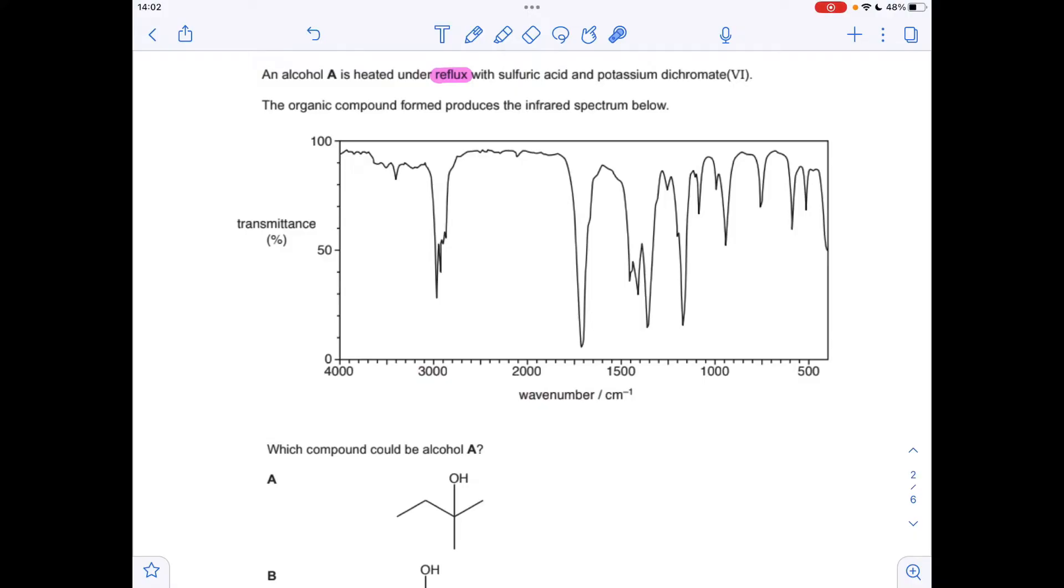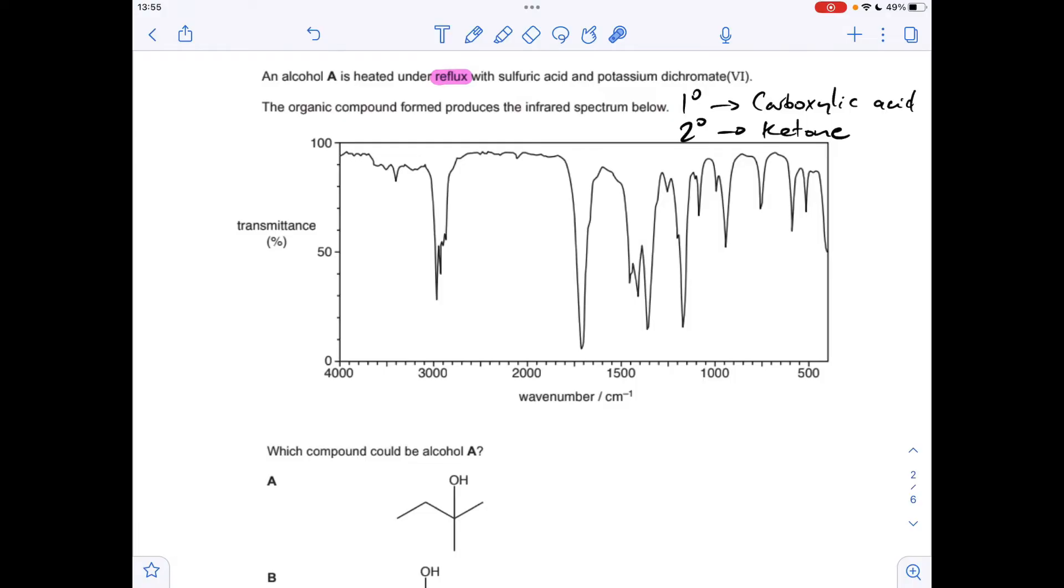Moving on to the last of the multiple choice questions. You'll notice I've highlighted the word reflux, that's really important for this question. Just a quick recap: when you oxidize an alcohol under reflux, if it's primary you'll get both oxidations so you'll go to the aldehyde then to the carboxylic acid. If it's a secondary alcohol you can only oxidize them once to a ketone, and tertiary alcohols remember cannot be oxidized.